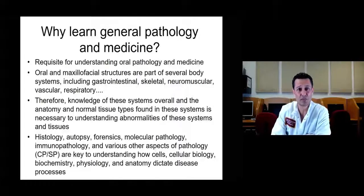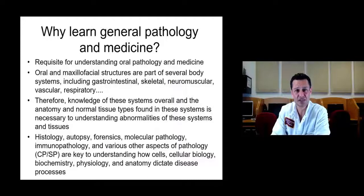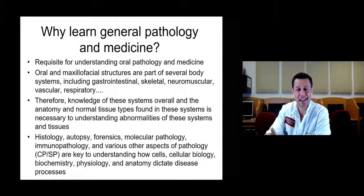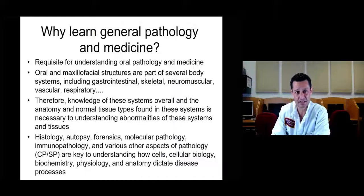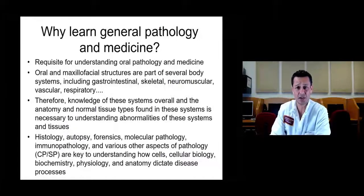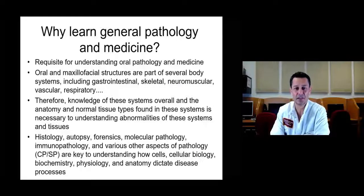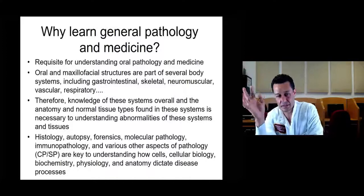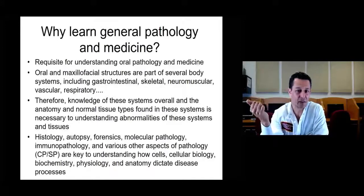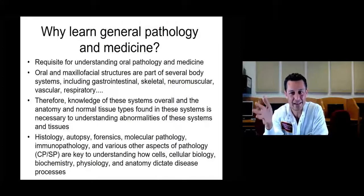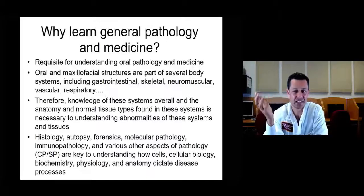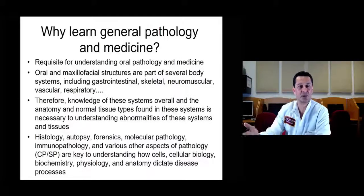These maxillofacial or head and neck structures are integrated into many different systems, which is why knowledge of basic body systems and pathophysiology is very important. Knowledge of anatomy and normal tissues is necessary to understand abnormalities that arise from these tissues. Topics like histology, autopsy, forensics, molecular pathology, immunopathology, and clinical pathology are key to understanding how cellular biology, biochemistry, physics, and anatomy dictate disease processes.